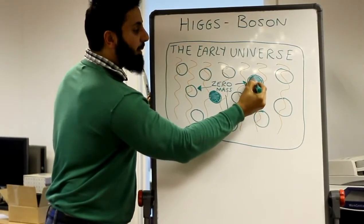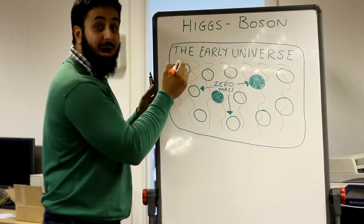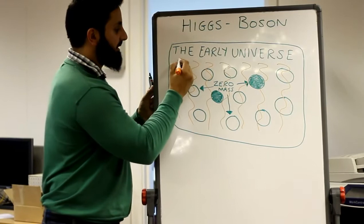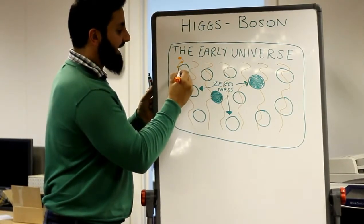Now, where does the Higgs boson come into play? Well, the Higgs boson is the particle that makes up the Higgs field. So here it is. It's like the building blocks of the Higgs field.